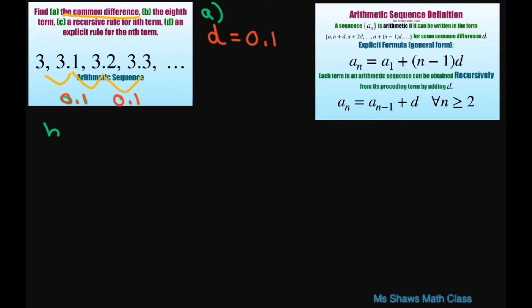So part B says find the 8th term. So we're going to use this explicit formula and say A sub 8, so this is going to be 8 terms total, equals your first term plus n. Your n is 8, so it's going to be 8 minus 1 times your common difference.